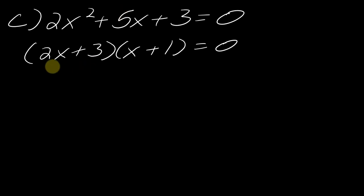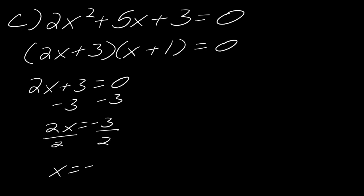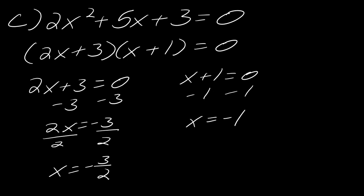If you're not sure how the factoring works, I'll drop links to how to factor things like this — I'm using trial and error for these. Now I can set each factor equal to zero. For 2x plus 3 equals zero: subtract 3 to get 2x equals negative 3, then divide by 2 to get x equals negative three over two. For x plus 1 equals zero: x equals negative 1. So my solutions are x equals negative 1 and x equals negative three over two.